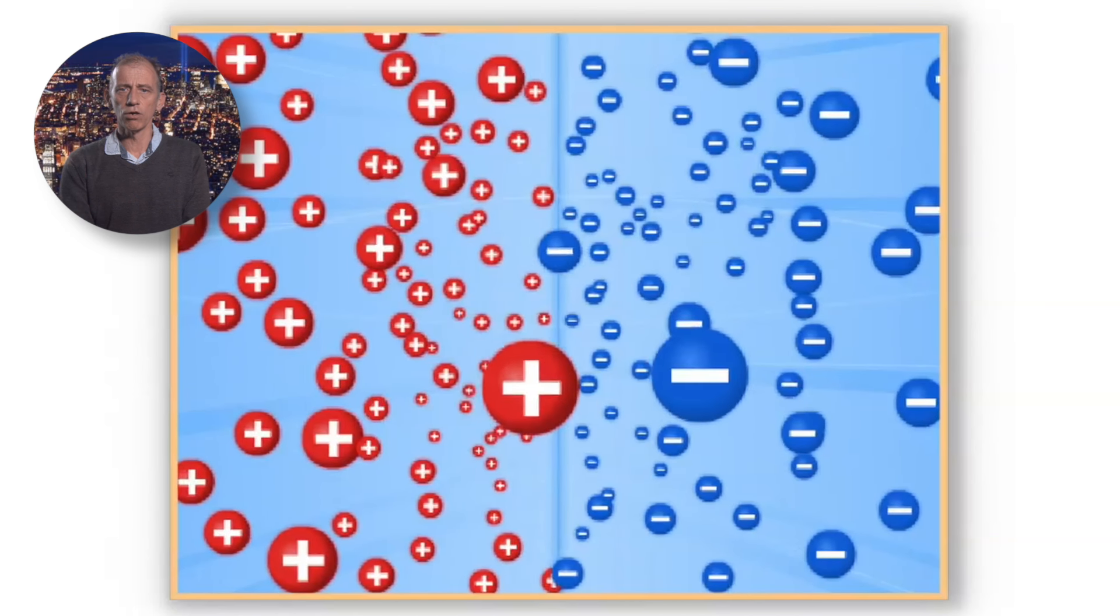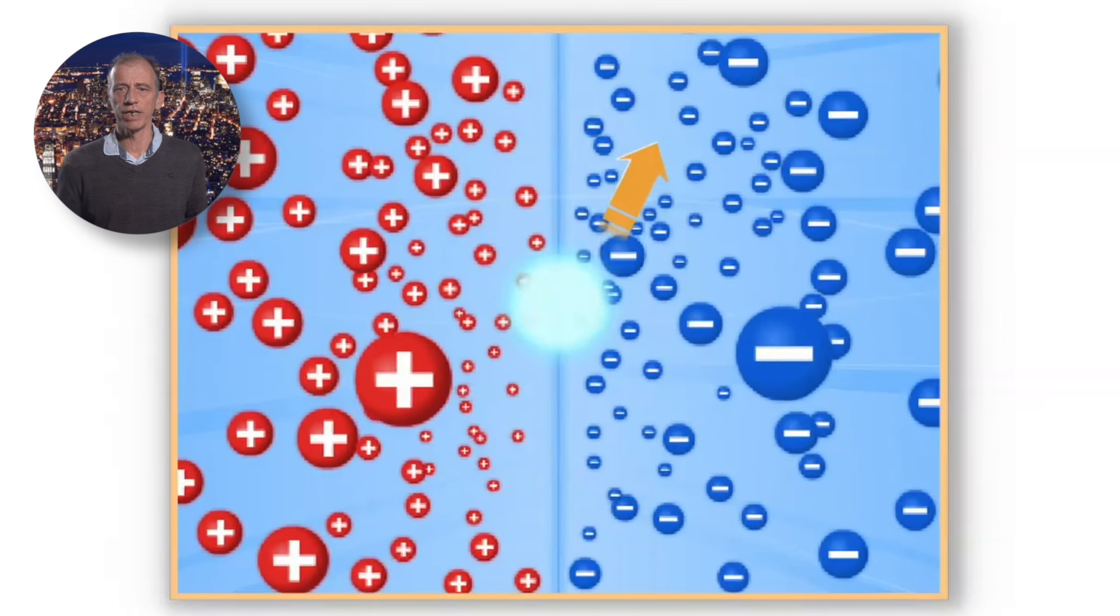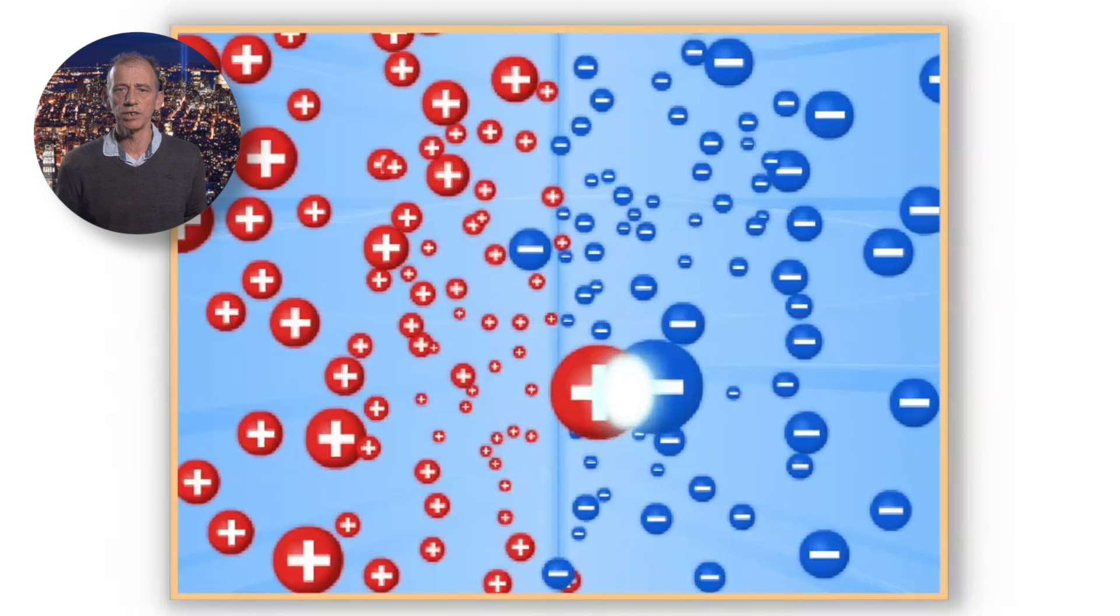When a free electron comes near a hole, it combines with the hole. The hole exists at a lower energy level than the free electron, so the electron must lose energy to combine with the hole.